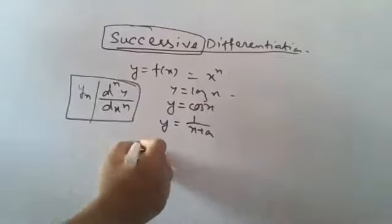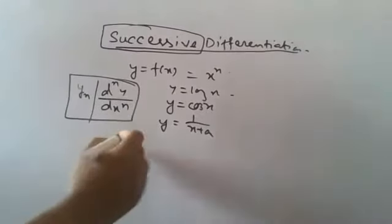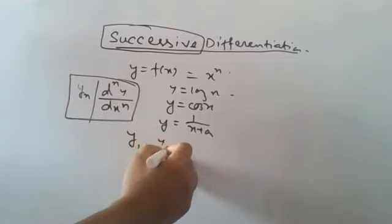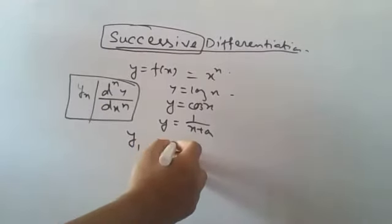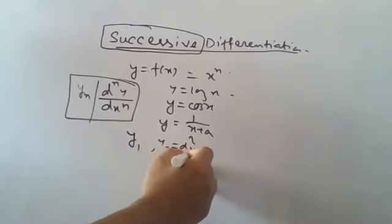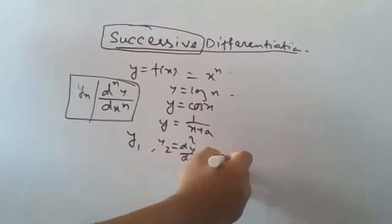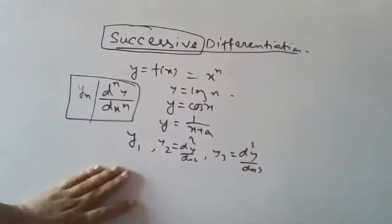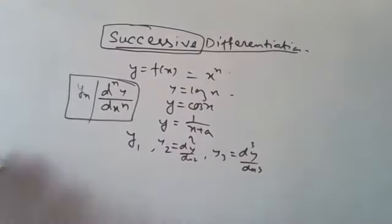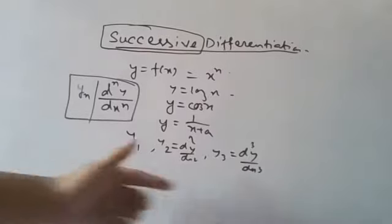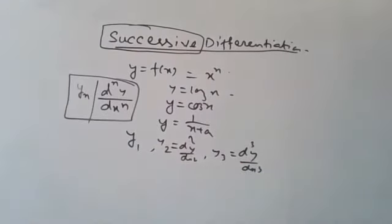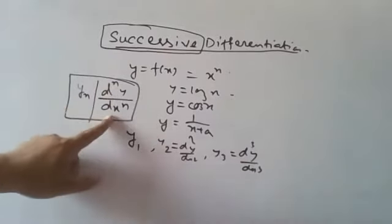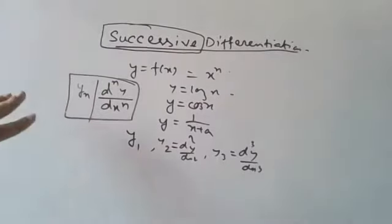We can use this notation for any order of differentiation. y1 is the first derivative, y2 is d²y/dx², y3 is d³y/dx³. If we differentiate n times, we denote the result as yn, which is dny by dxn.